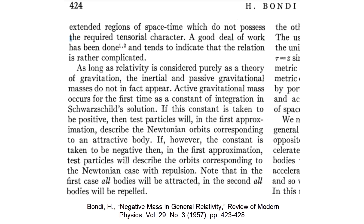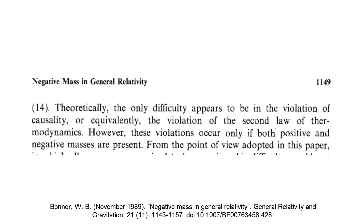These negative masses, or exotic matter, have been used to support solutions such as traversable wormholes and warp drives, which also give rise to paradoxes like time machines or causality-breaking phenomena. William B. Bonner showed that these problems, such as violations of causality, in general relativity occur only if both positive and negative masses are present.